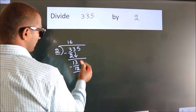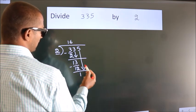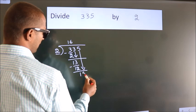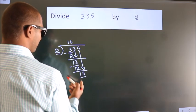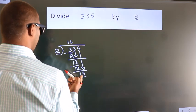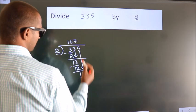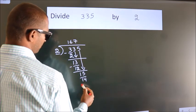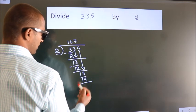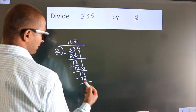After this, bring down the beside number. So 5 down. So 15. A number close to 15 in 2 table is 2 times 7 is 14. Now we subtract. We get 1.